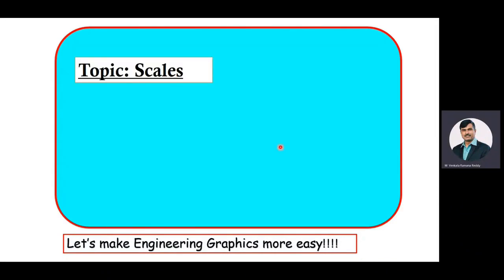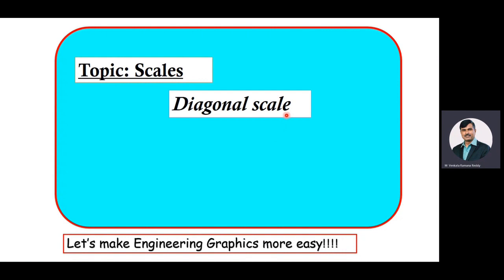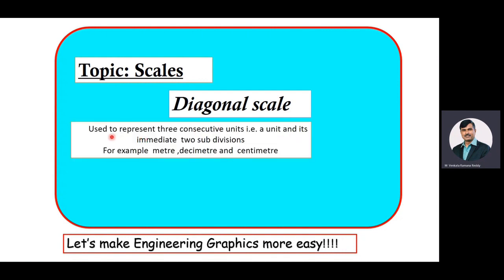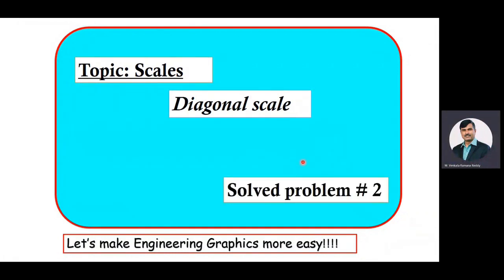We are into the discussion on the topic of scales. Under scales, we are going to construct a diagonal scale. The diagonal scale is used to represent three consecutive units — a unit and its immediate two subdivisions. For example, meter, decimeter, and centimeter. This is the second solved problem we are discussing under the diagonal scale concept.